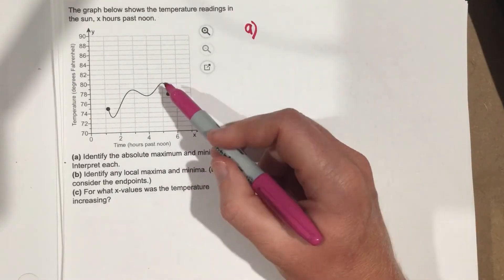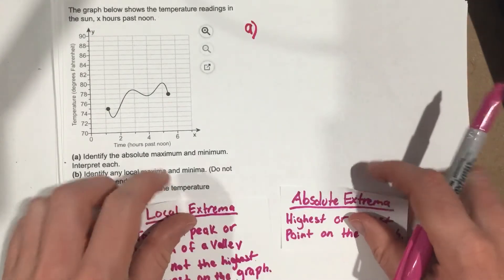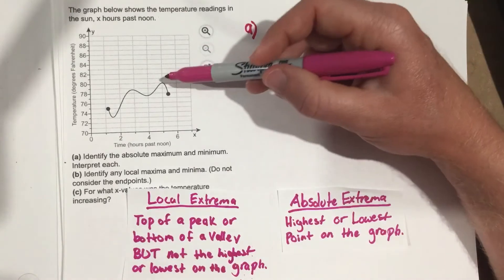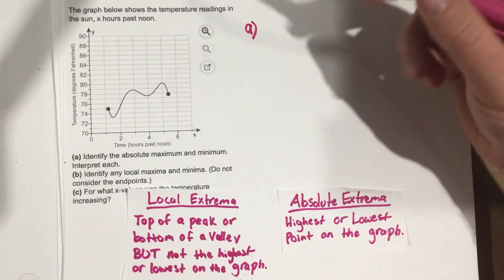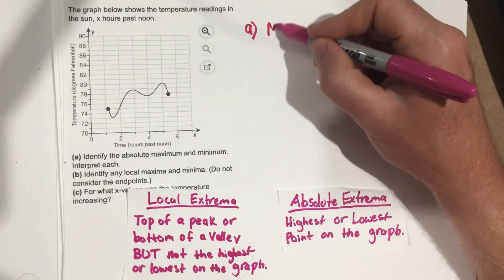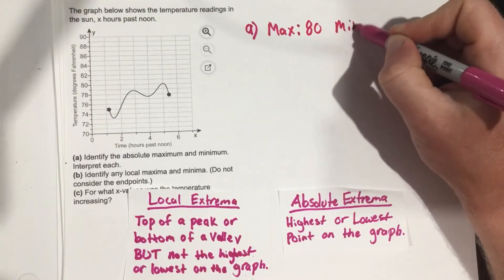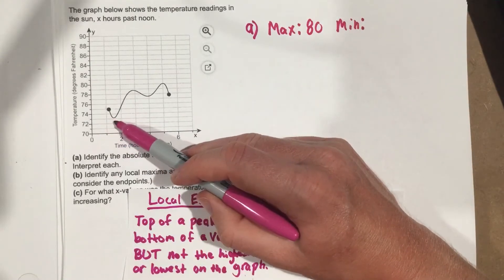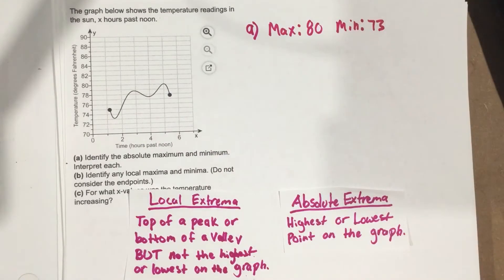The absolute maximum is the highest point. We remember this from our definitions of local and absolute extrema. The highest point is right here and it looks like 80, so the max is 80. The min is down here and it doesn't quite touch 73 but it's close, so we'll say 73.